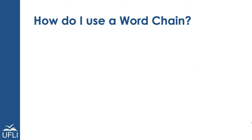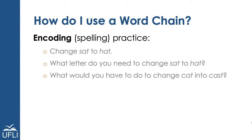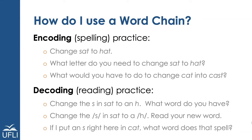When we're using the word chains for encoding practice, we word the directions in such a way to support the student's spelling. So we may say: change sat to hat — we're giving the word and asking the student to spell it. Or: what letter do you need to change sat to hat? Or finally: what would you have to do to change cat into cast?